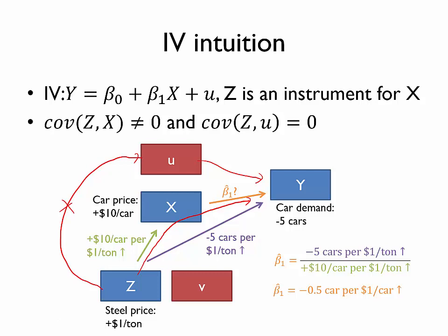You might notice that this division we've done to estimate Beta 1 is actually quite analogous to the IV formula. The numerator is telling us something about the relationship between Z and Y — in this case, how steel price affected car demand — whereas the denominator is telling us something about the relationship between Z and X, steel price and car price. So in essence, we are using this exogenous event — a change in the price of steel — to look at how it affected both car price and car demand, and using that natural experiment to estimate the effect of car price on car demand.